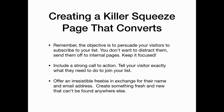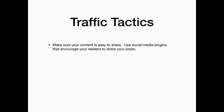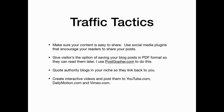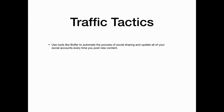Offer an irresistible freebie in exchange for their name and email address — create something fresh and new that can't be found anywhere else. Here are a few traffic tactics to help you launch your affiliate website: make sure your content is easy to share using social media plugins that encourage your readers to share your posts. Give your visitors the option of saving your blog posts into PDF format so they can read them later — I use PostGopher.com to do this. Quote authority blogs in your niche so they link back to you. Create interactive videos and post them to YouTube and DailyMotion, and build your own social network and share your content everywhere. Use tools like Buffer to automate social sharing and update all your social accounts every time you post new content.